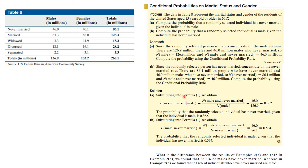Let's see how you did. For part A, the probability of never married given male: you're in the male category and never married, so it's 46.0 over 126.9, which is about 36%. For part B, the probability of male given never married: we're in the never married column, so it's 46 over 86.1, which is over half. These two numbers are different because they're asking different questions — never married given male versus male given never married. It matters, and those two are usually not the same.